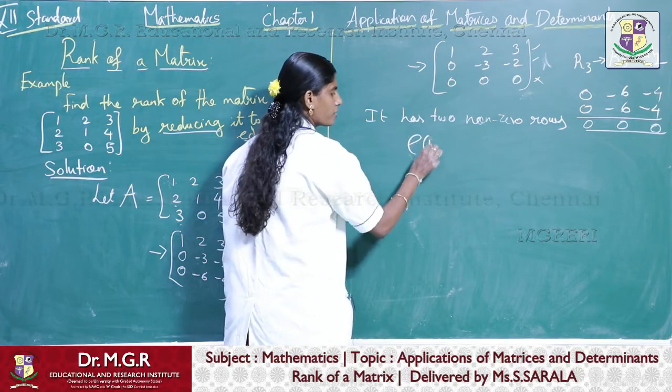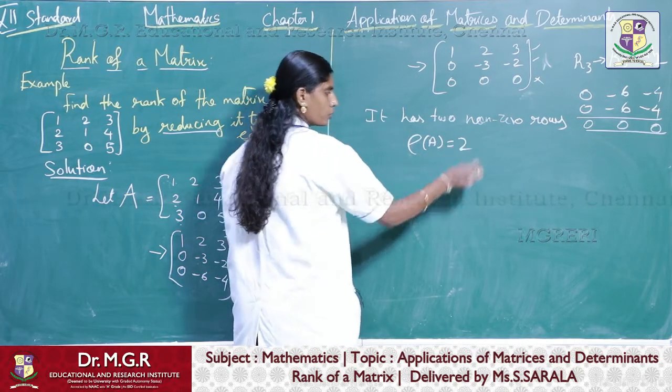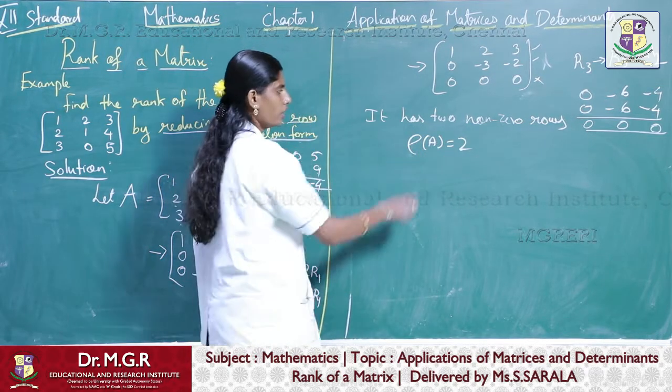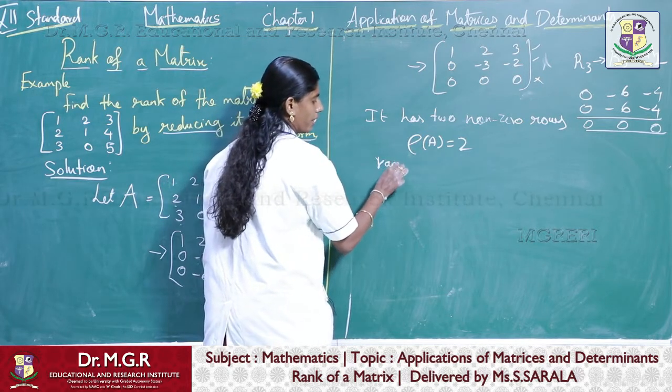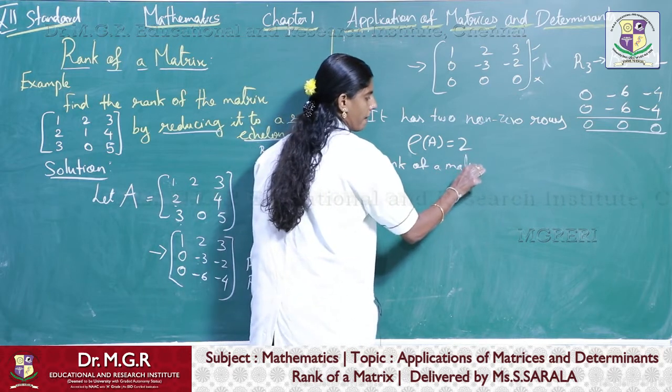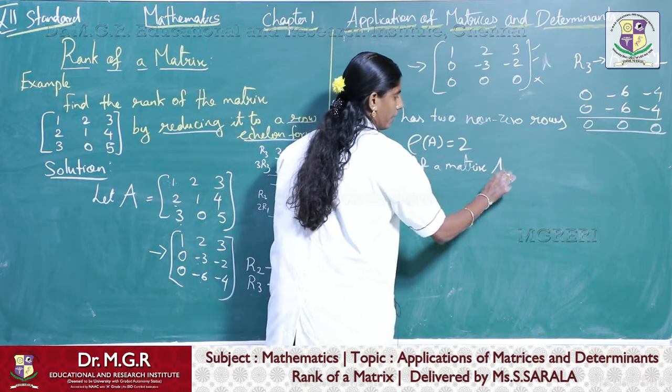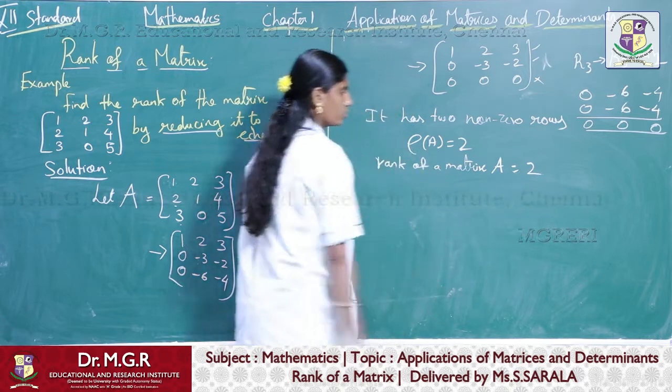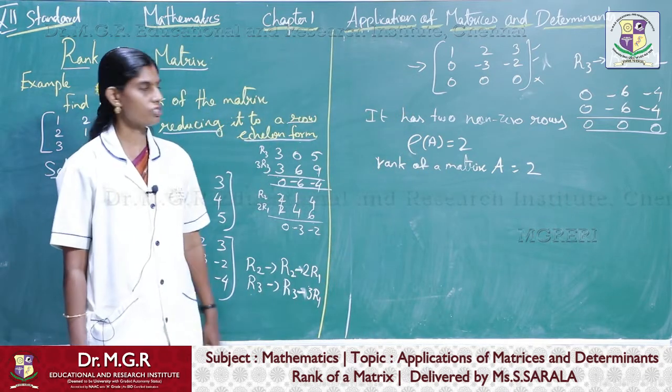Row of A is equal to 2. What is the row of A? This is nothing but the rank of a matrix. Rank of matrix A is equal to 2.